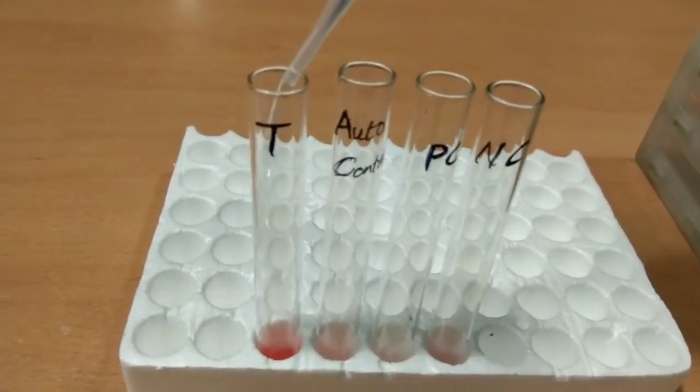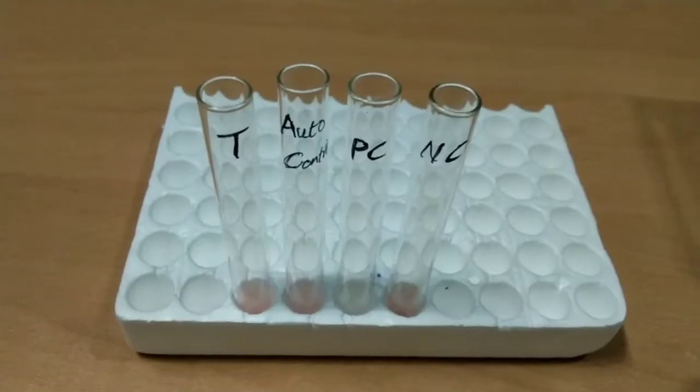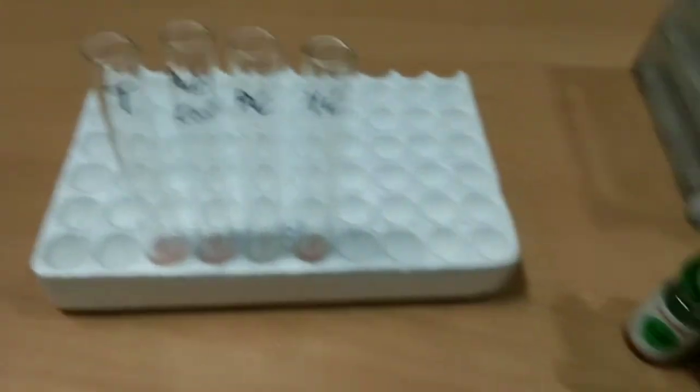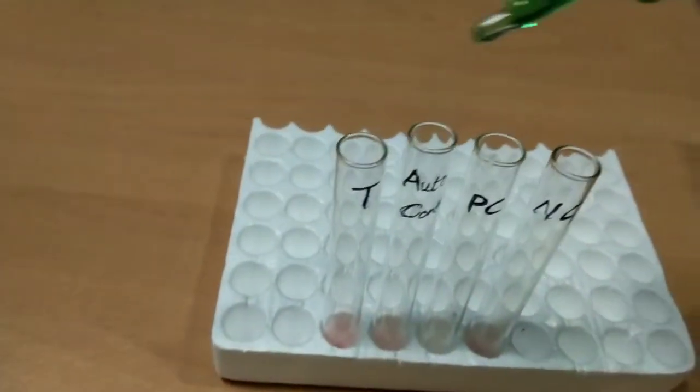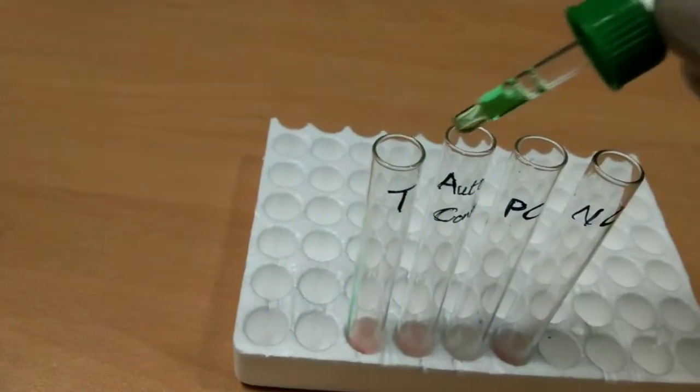Wash the cells three times with normal saline. After complete decanting of the final wash, add a drop of AHG into each tube.